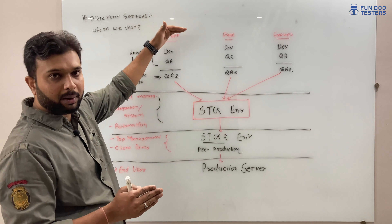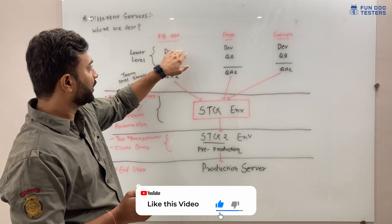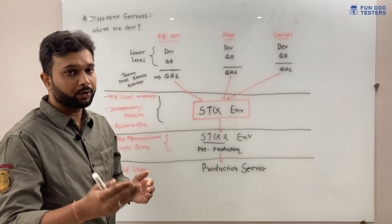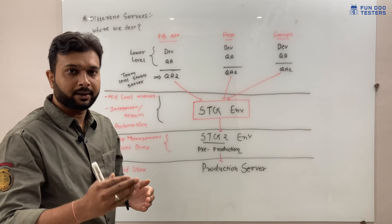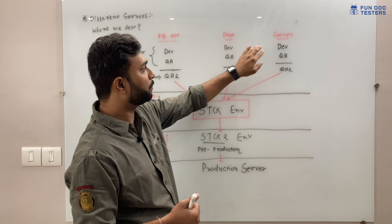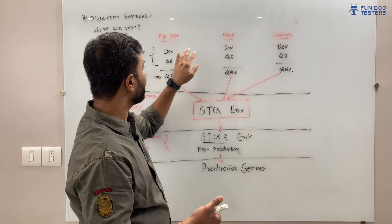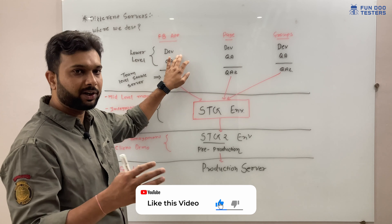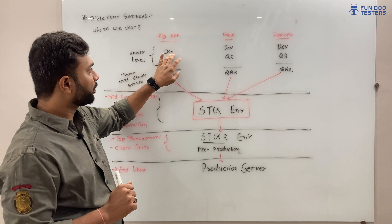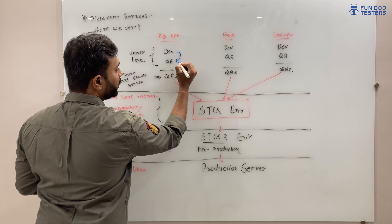In Facebook there are three different teams for each functionality. After requirement gathering and non-technical work, developers come into the picture and start building the application. By default, developers require a server, so the first server that comes into play is the dev server or development environment, where developers write their code and do basic unit testing.